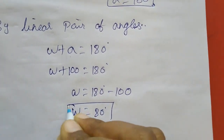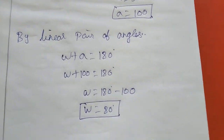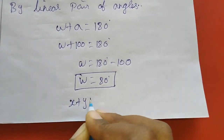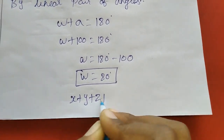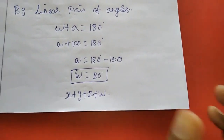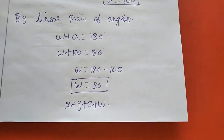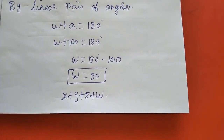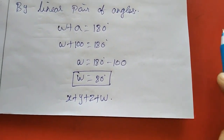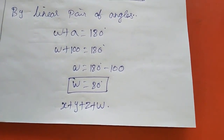Now I have told the values of x, y, z, and w. You have to find x plus y plus z plus w — that is the homework for you. That's all dears — exercise 3.1 is completed. In the next class we will move to exercise 3.2. Thank you dears.